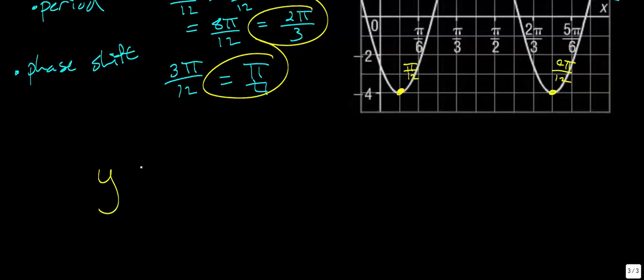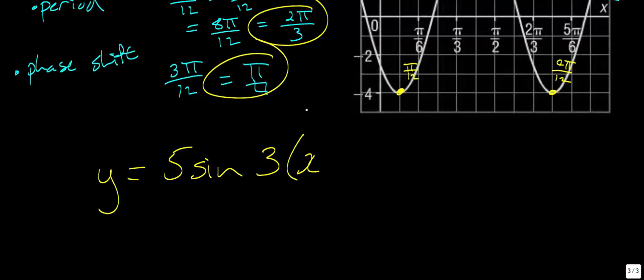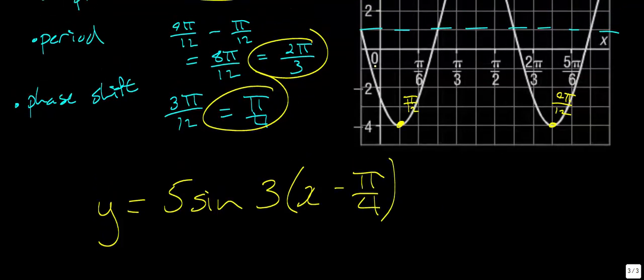We can now write the equation. Our a value is 5. For b: the period is normally 2π, but here it's 2π/3 — the opposite of dividing by 3 is multiplying by 3, so b = 3. Our phase shift was π/4, so we write minus π/4. The midline was moved up 1 unit, so we add 1. The final equation is y = 5·sin(3x − π/4) + 1. That concludes this lesson, where we saw how to graph a given equation and how to find an equation from a given graph.